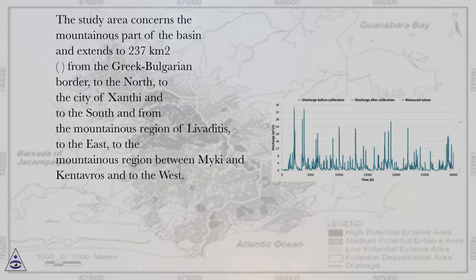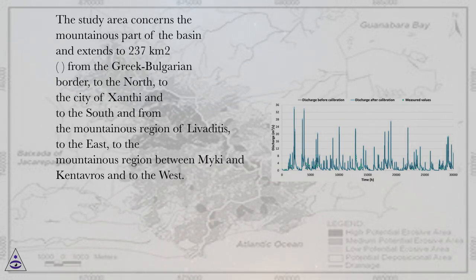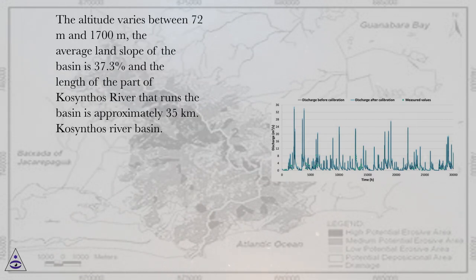The study area concerns the mountainous part of the basin and extends to 237 square kilometers, from the Greek-Bulgarian border to the north, to the city of Xanthi to the south, and from the mountainous region of Livadides to the east, to the mountainous region between Miki and Kintavros to the west. The altitude varies between 72 meters and 1,700 meters, the average land slope of the basin is 37.3%, and the length of the part of Kosynthos River that runs the basin is approximately 35 kilometers.